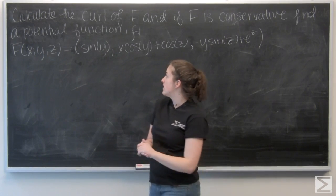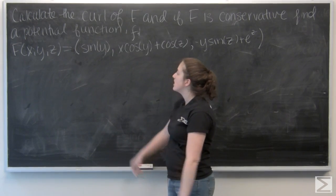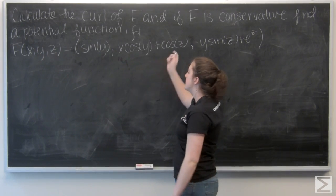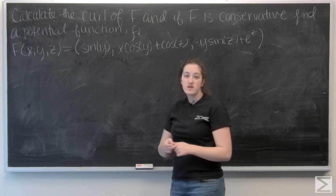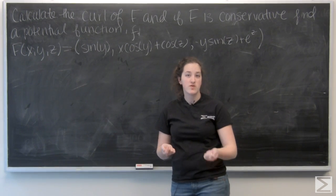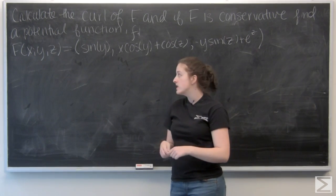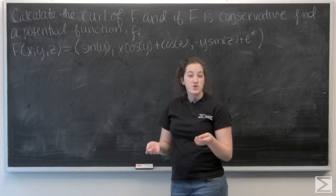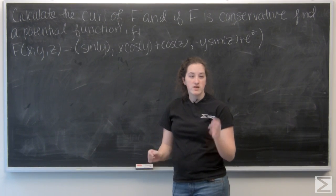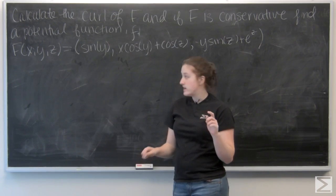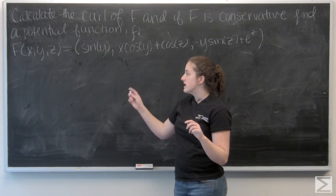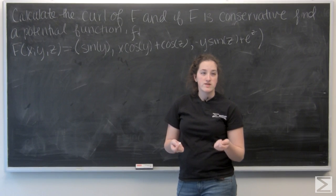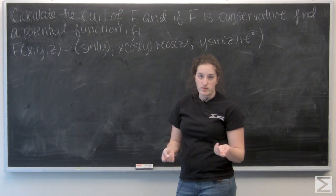For this problem, I'm asked to calculate the curl of the given vector field f, and then if f is conservative, to find a potential function for it. So let's recall how we calculate curl — it's actually the cross product of the gradient vector and f. I'm going to calculate this using a 3 by 3 matrix.